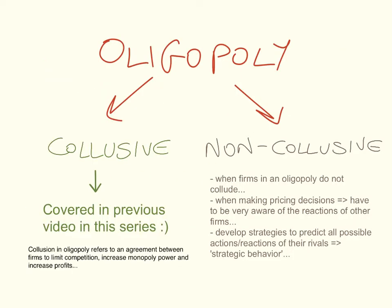In the previous video in this series, which is oligopoly Part 1, I talked about collusive oligopoly. Just to refresh your memory, collusion in oligopoly refers to an agreement between firms to limit competition, increase monopoly power, and increase profits.